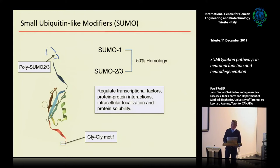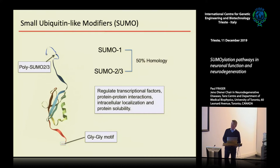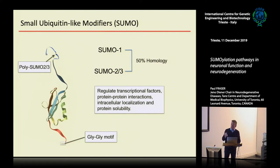They also mediate protein-protein interactions and different shuttling to compartments of the cells, as well as protein stability and solubility. Anybody working with recombinant proteins might have used the SUMO construct to increase solubility — that's actually the yeast SUMO, which is quite different, because the two classes of human SUMOs behave quite differently.